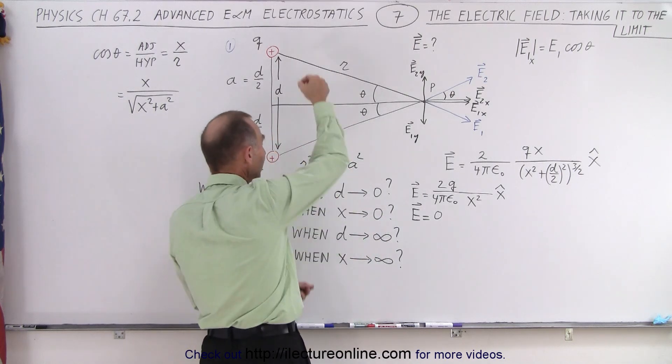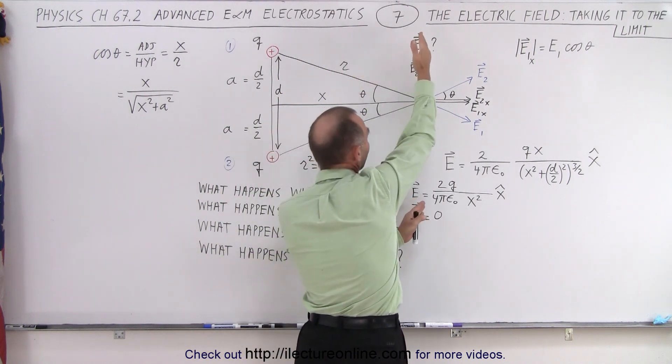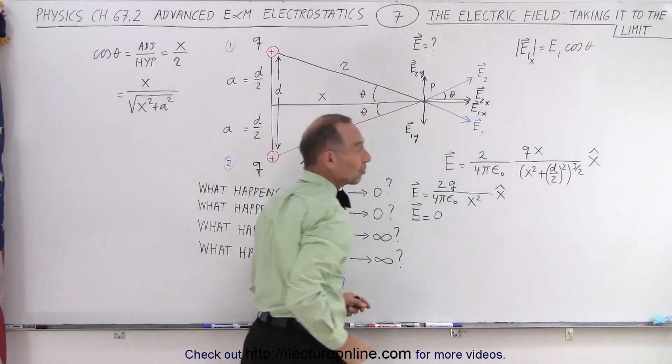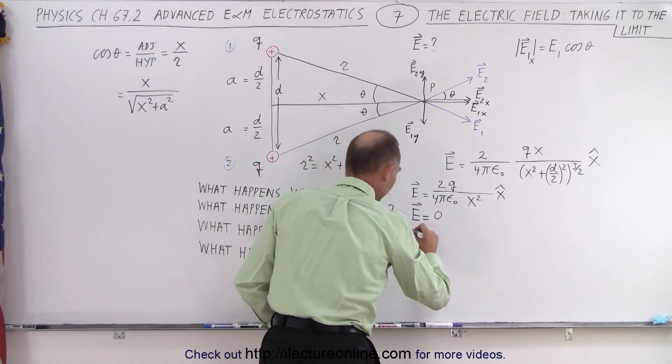So when d goes to infinity we put them infinitely far apart. Essentially that almost makes it seem as if they're right over the point of interest, equal distance, equal magnitudes. And again it would cancel out and go to 0.